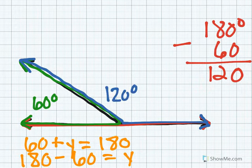One way to check is when you add 120 degrees and 60 degrees you should get 180 degrees. Okay, 120 plus 60 equals 180. Both of those angles together when added equal a straight angle.